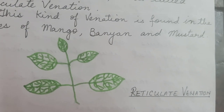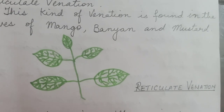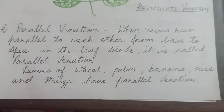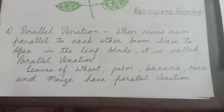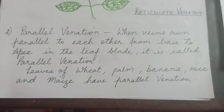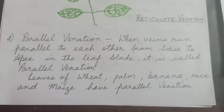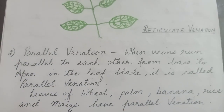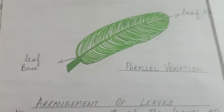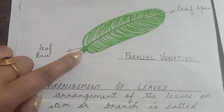Now we study the second kind of venation, which is known as parallel venation. When veins run parallel to each other from base to apex in the leaf plate, it is called parallel venation. Leaves of wheat, palm, banana, rice, and maize have parallel venation. I'll show you the diagram of parallel venation so that you can see what this kind of venation looks like.